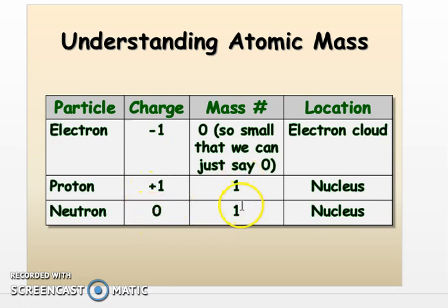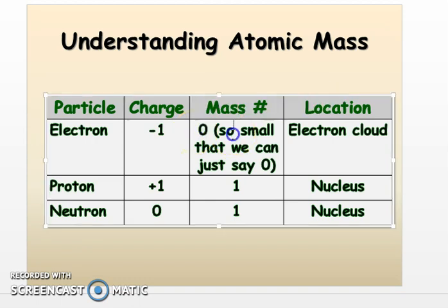In terms of mass, this is a relative mass. What that means is protons and neutrons are the same weight approximately. The electron, even though I have here zero, technically it is not zero. They are incredibly small. You would need about 2,000 electrons to equal one proton or one neutron. So they're so small we basically just say it's approximately zero.